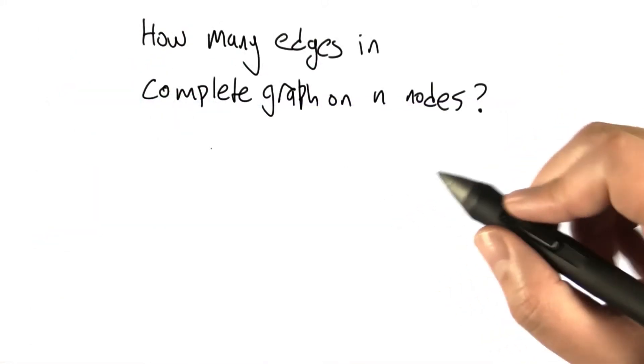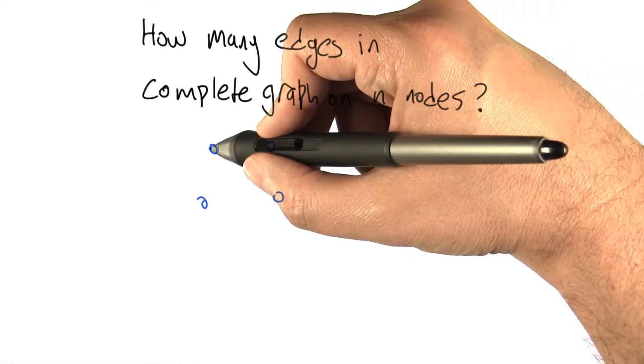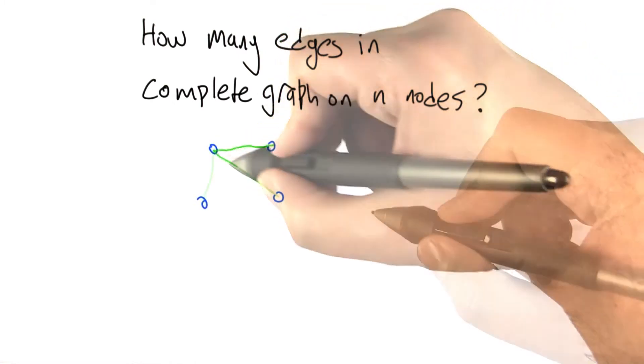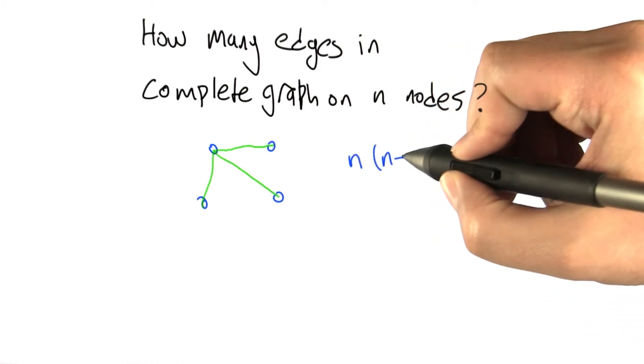With that as our insight, can we actually write down what the formula is for a graph with n nodes? Essentially what happens is each node gets an edge to each other node.